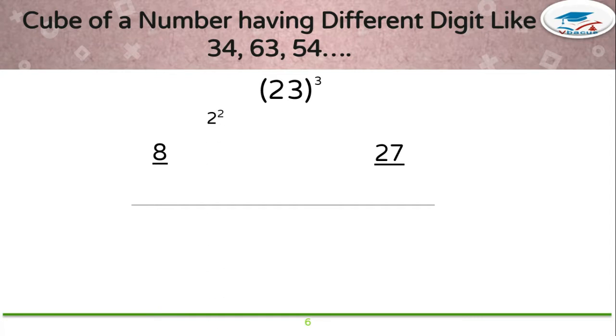Now square of 2 should be multiplied by 3. That is, 2 times 2 is 4, 4 times 3 is 12. Now square of 3 should be multiplied by 2. So 3 times 3 is 9, 9 times 2 is 18.